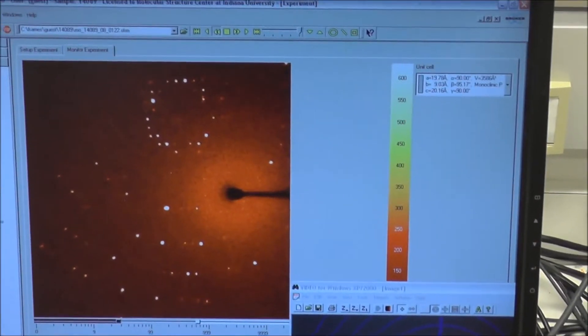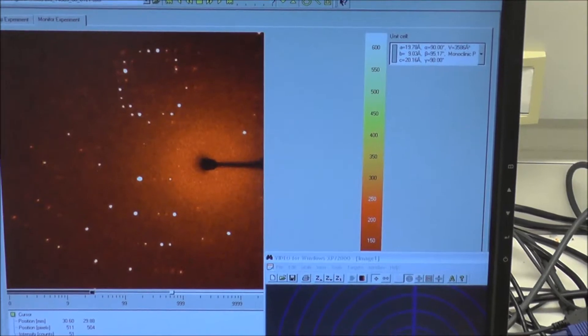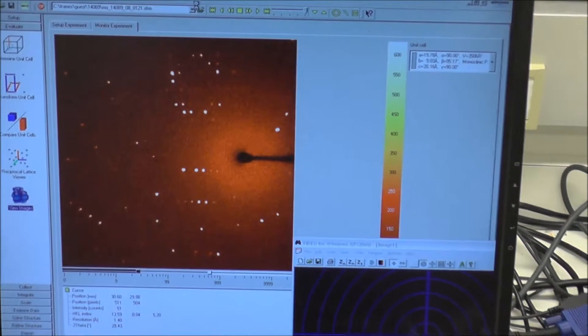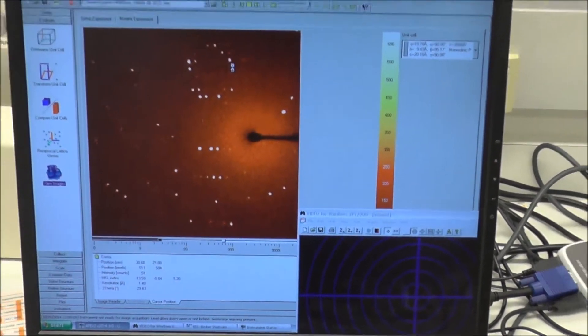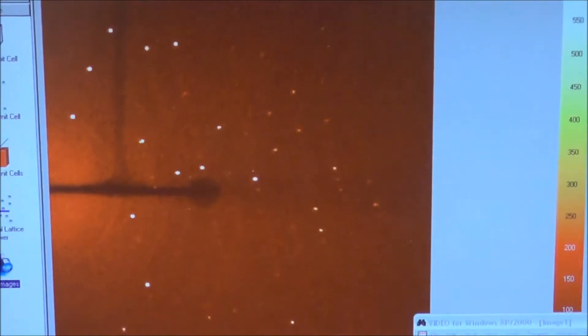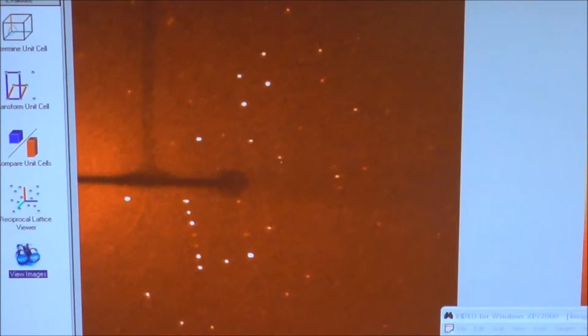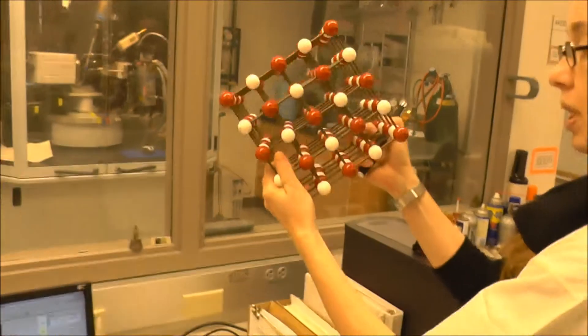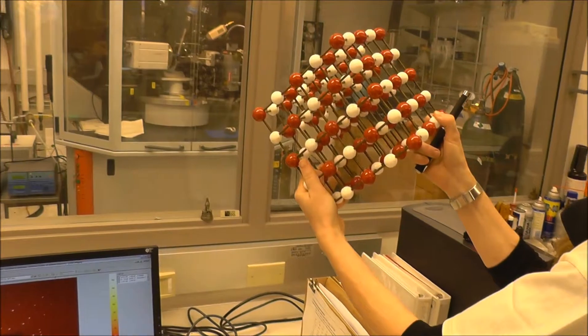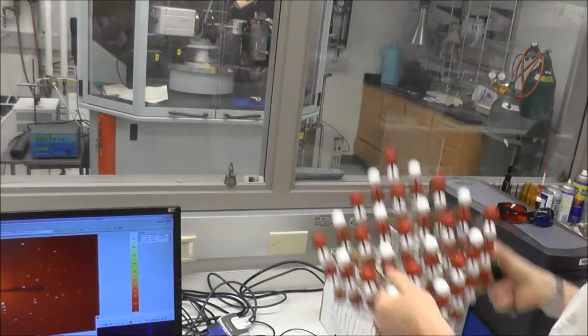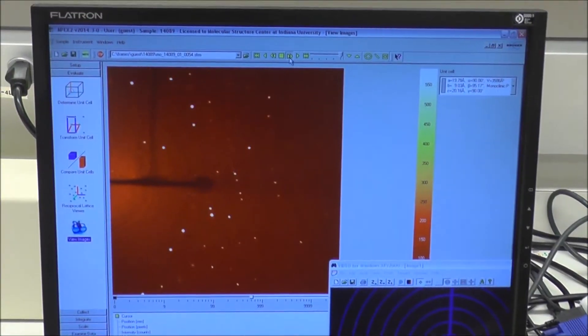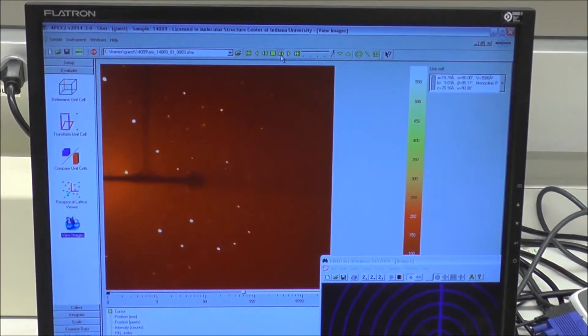We can page through them here. This is actually the actual image. When we take a diffraction image of the crystal, it is in a very particular position, and then we rotate, take the next one, rotate, take the next one, rotate.